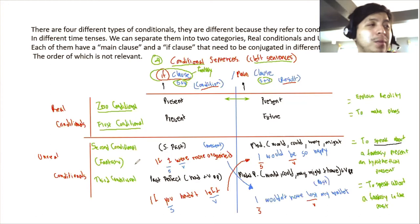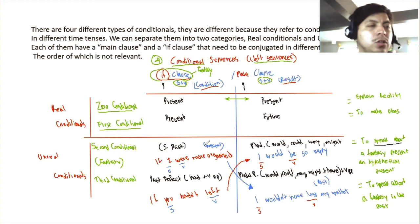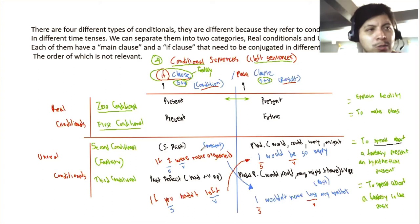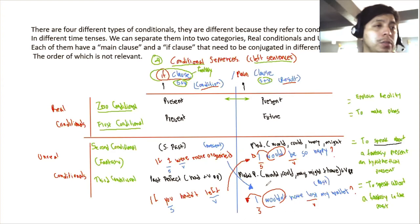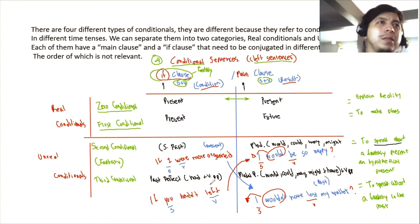A mixed conditional is when the condition and result are in different time frames: a present condition with a past result, or a past condition with a present result. Questions still go in the main clause: 'I wouldn't have lost my wallet if I were more organized' or 'I would be so happy if you hadn't left' — both orders work. Now, one more important thing.